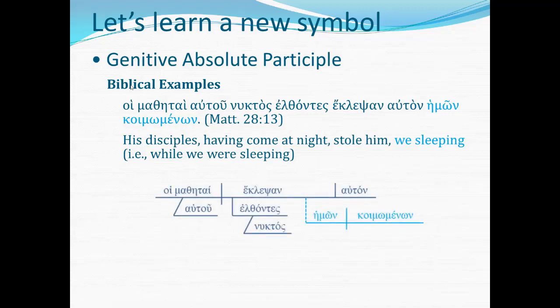Here's what it looks like. 'His disciples stole him' is the main clause. 'Having come at night' — now the word nuktas grammatically could actually be a modifier for eklepsan: 'His disciples came and stole him at night.' But I have not found any English versions that translate it that way — they all seem to connect it with elthontes, so that's the way I've diagrammed it as well. Nuktas modifies elthontes and tells when they came. Elthontes is the simple adverbial participle in this sentence. Then hēmōn koimōmenōn is the genitive absolute construction — hēmōn in the subject slot, koimōmenōn in the verb slot — overall on that right angle modifier shelf used for adverbial participles, with the dotted vertical segment to show that it's the absolute construction.